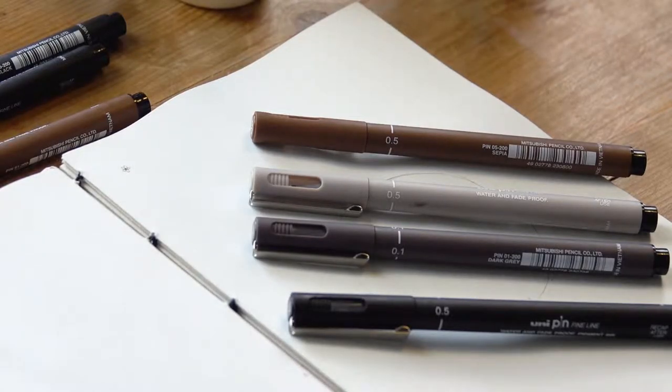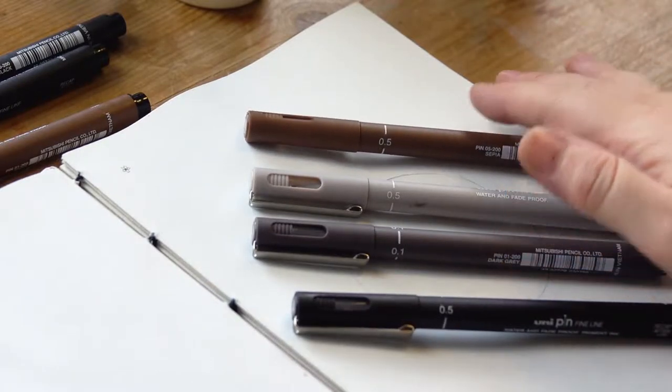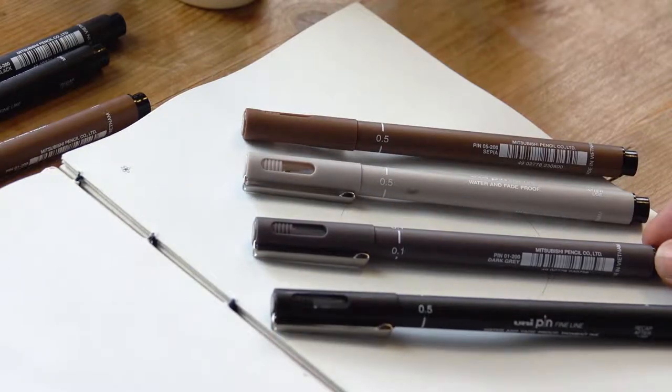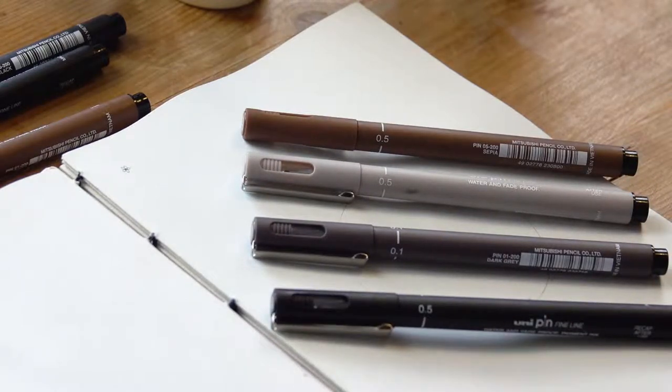Hello, today I'm going to talk through the different colors available that you can get for your UniPin pens. I'm going to talk you through the black, the dark grey, the light grey, and the sepia.